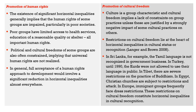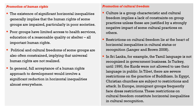There are two more aspects regarding promotion of human rights and promotion of cultural freedom. The existence of significant horizontal inequalities implies that the human rights of some groups are impaired, particularly in poorer societies. Challenges with respect to human rights goals do not usually enter utility functions of individuals; however, increasingly economists have become sensitive to how such group-based inequalities — particularly in the context of human rights violations — can lead to decreased utility. Poorer groups have limited access to health services, education of reasonable quality, or shelter — all important human rights. Political and cultural freedoms of some groups are often constrained, which means that universal human rights are not realized, and that impacts their human development indicators.